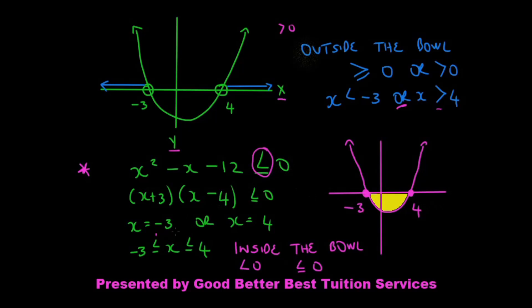You can test it if you want — substitute any value between negative 3 and 4 and you'll see that this expression will be less than 0. If you include negative 3 and 4, you'll see that it will be less than or equal to 0. So we're going to say that x is greater than or equal to negative 3, but less than or equal to 4.